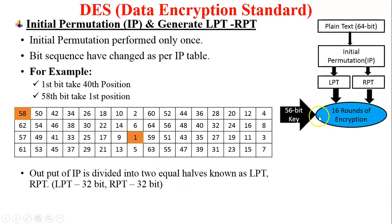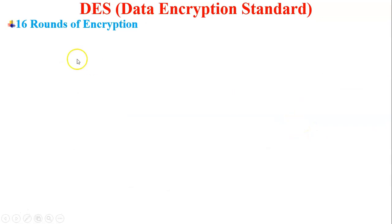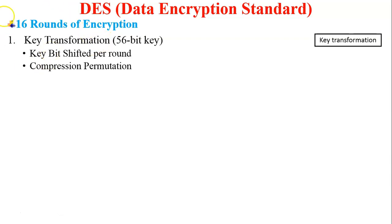The next process is the 16 rounds of encryption. We have already generated a 56-bit key using the key discarding process. LPT and RPT are the inputs to the 16 rounds of encryption. In the 16 rounds of encryption — the encryption function of DES — first we perform key transformation. In the key transformation process, key bits are shifted per round — a circular left shift of the key bits — followed by compression permutation. We will discuss why compression permutation is performed later.